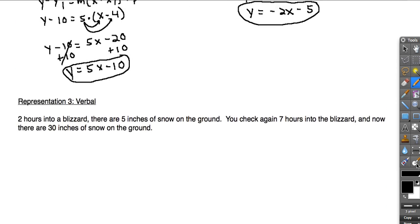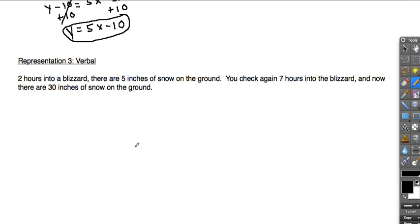A third and final representation to look at is what happens if you have a verbal model. So here I have a 2 hour blizzard that gave us 5 inches of snow, and as the blizzard went on to a total of 7 hours, we ended up with 30 inches of snow on the ground. The key thing to know in a problem like this where you have to write the equation is you're usually given points, and they relate the hours here, 2, to the number of inches of snow, 5. So we write that as a point 2 comma 5. Likewise, when we had 7 hours of snow, we ended up with 30 inches. So that's another point, 7, 30.